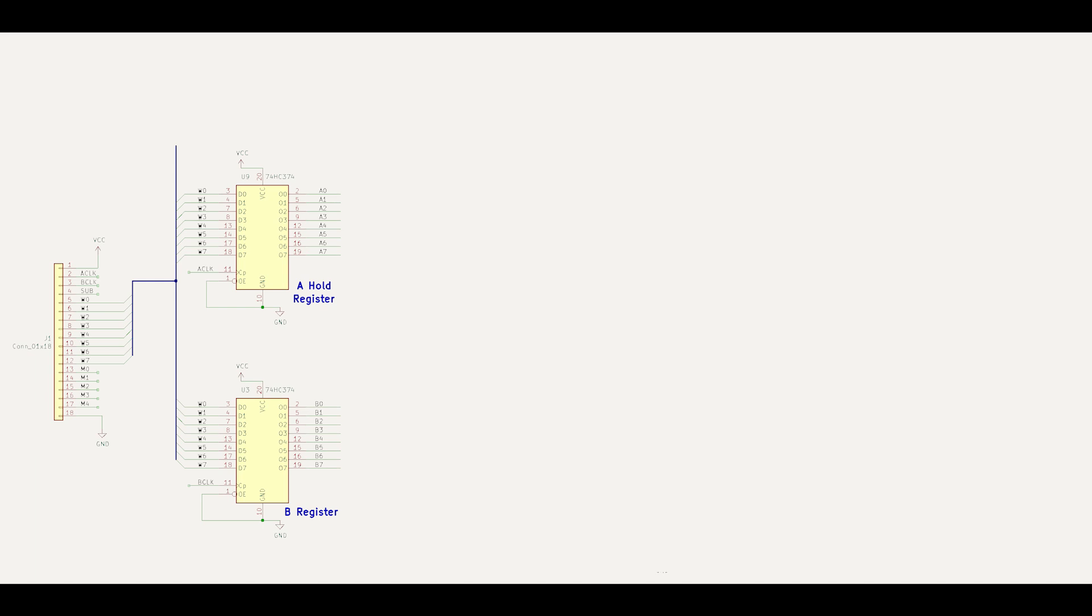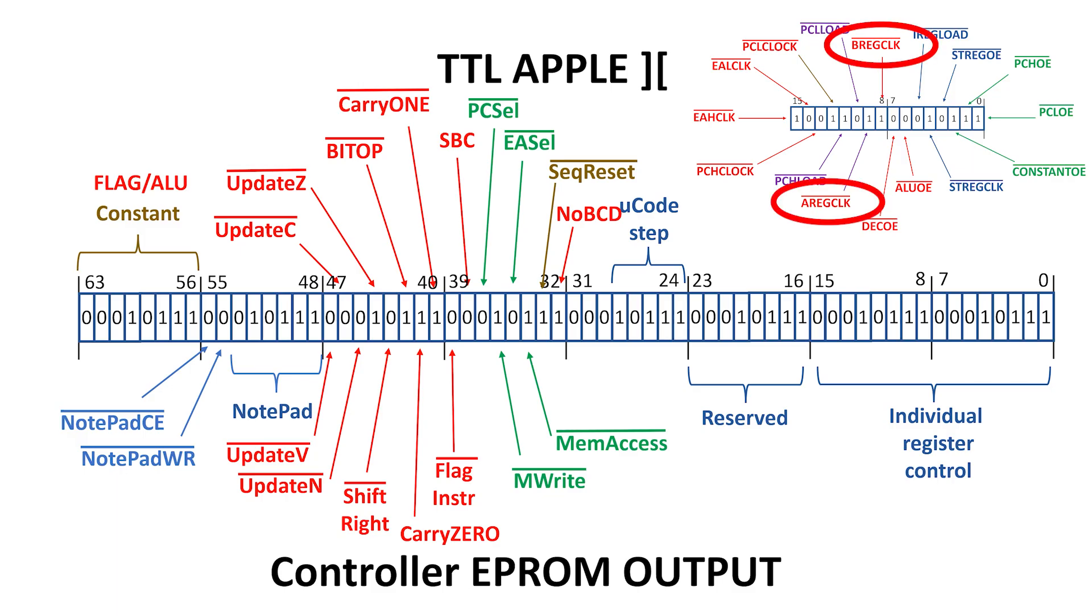So, we have two registers feeding off it, the A hold register and B register, which in turn feed the ALU. These are fed directly from the W bus, and they're clocked by a control word from the sequencer.